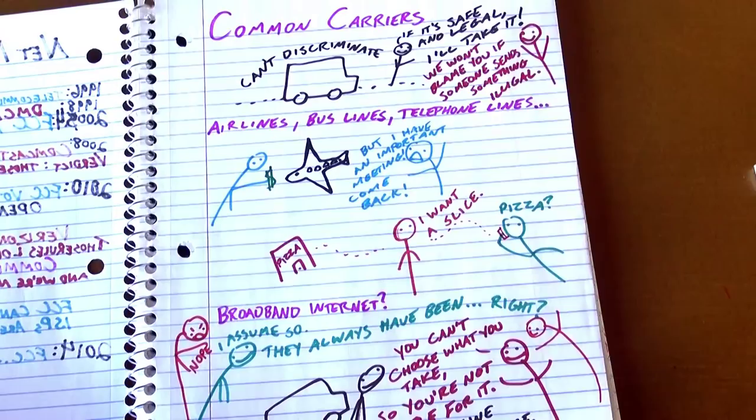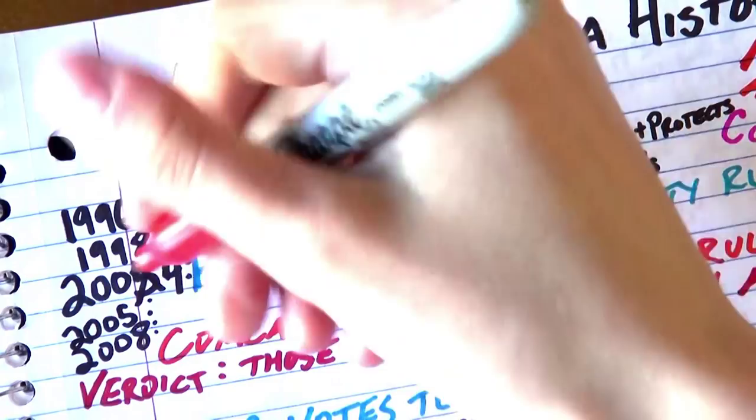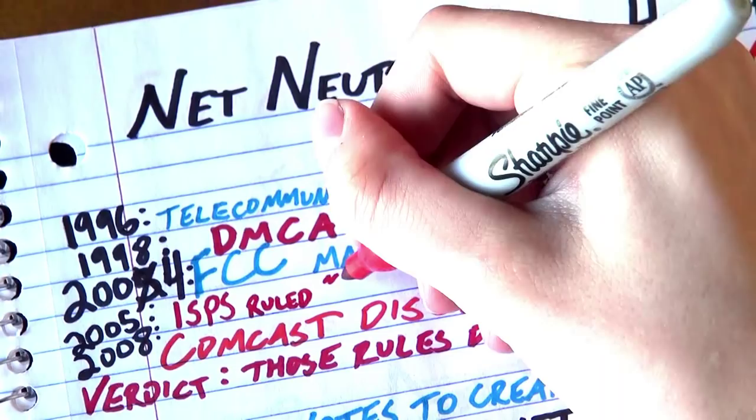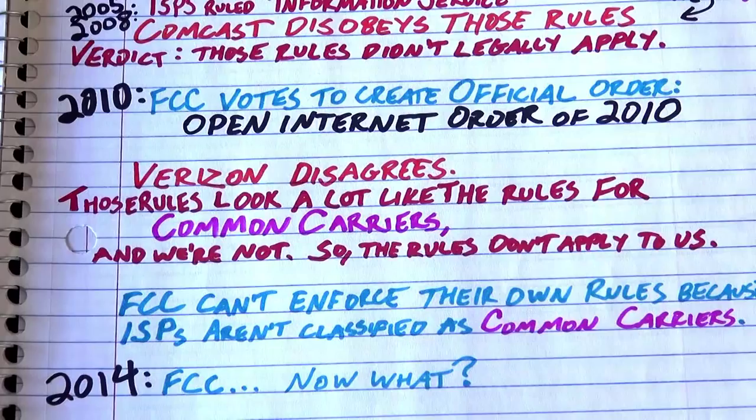There were a bunch of hearings. They won, they lost. And then in 2005, they managed to convince six out of nine judges that even though the internet is a telecommunication service, they also do other things. And the Telecommunications Act that would have classified them as a common carrier telecommunication service does not clearly state that they have to be classified that way even if they do other things.